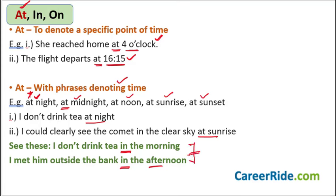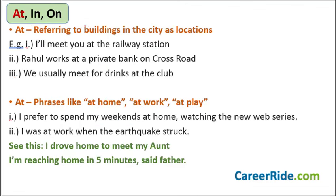Pay attention to these because these types of mistakes are very common. If you want to avoid them, you have to know that whenever you are talking about a specific point of time, you use 'at.' Similarly, whenever you are referring to buildings in your city as locations, there also you use 'at' as the preposition. For example: 'I'll meet you at the railway station.'